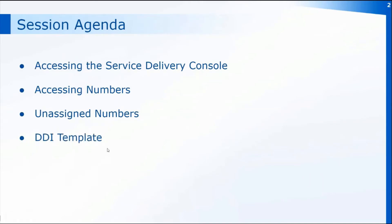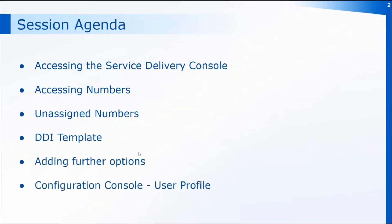We'll look at accessing the numbers section as well as looking for your unassigned numbers that you may have within the practice. We'll also look at using the direct dial number template and how to add further options into that call flow once you've created it. Finally, we'll look at the configuration console in the user profile where you can change the default settings for anything you're setting up within the service delivery console.